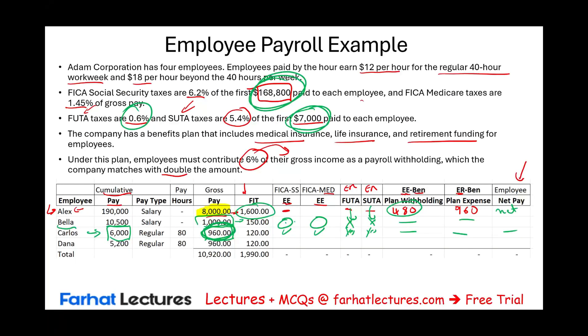The same applies to Dana — Dana will pay employee Social Security, employee Medicare, the employer pays FUTA and SUTA, the benefit withholding applies, and then we calculate the net pay.